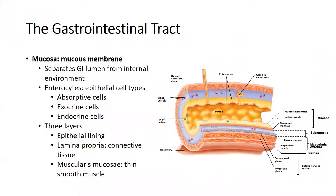Looking more closely at the mucosa: it helps to separate the GI lumen from the internal environment, which is especially important in the stomach given its highly acidic content. There are different types of cells throughout this layer — absorptive cells, exocrine cells such as goblet cells that secrete mucus, and endocrine cells such as the APUD cells, which are part of the neuroendocrine system. Different cells have different functions at different parts of the GI tract.